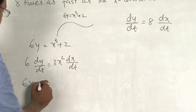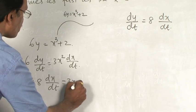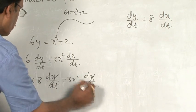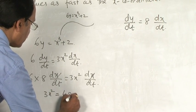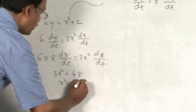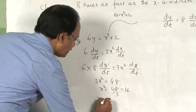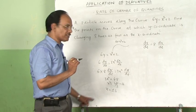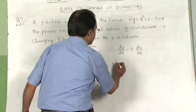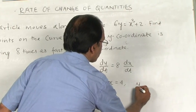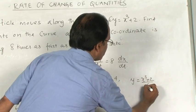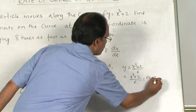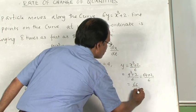Since dy/dt = 8·dx/dt, we replace dy/dt to get 6 × 8·dx/dt = 3x²·dx/dt. Canceling dx/dt from both sides, we get 48 = 3x², so x² = 16, giving x = ±4.